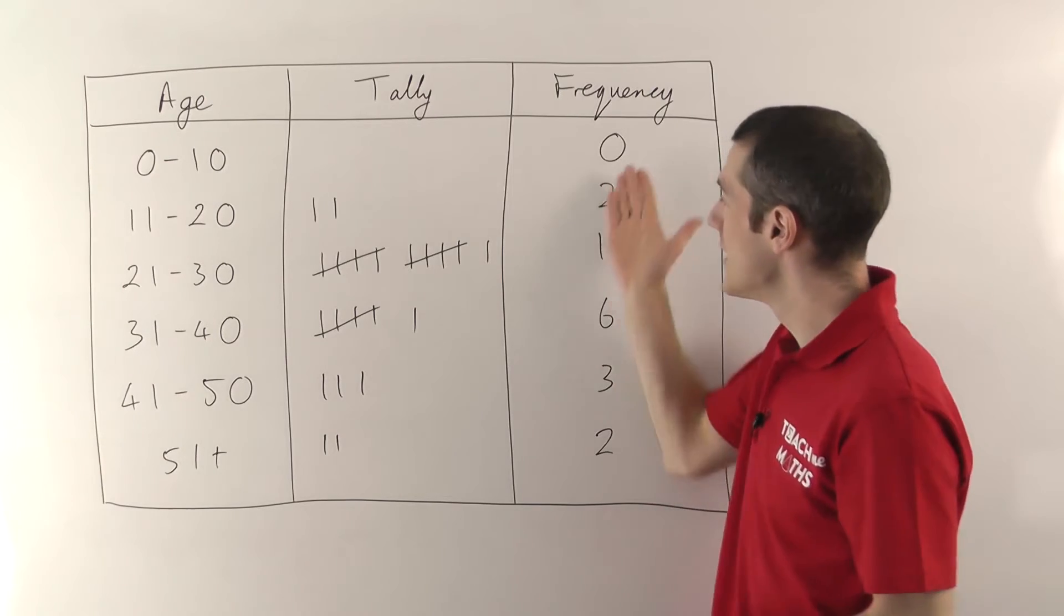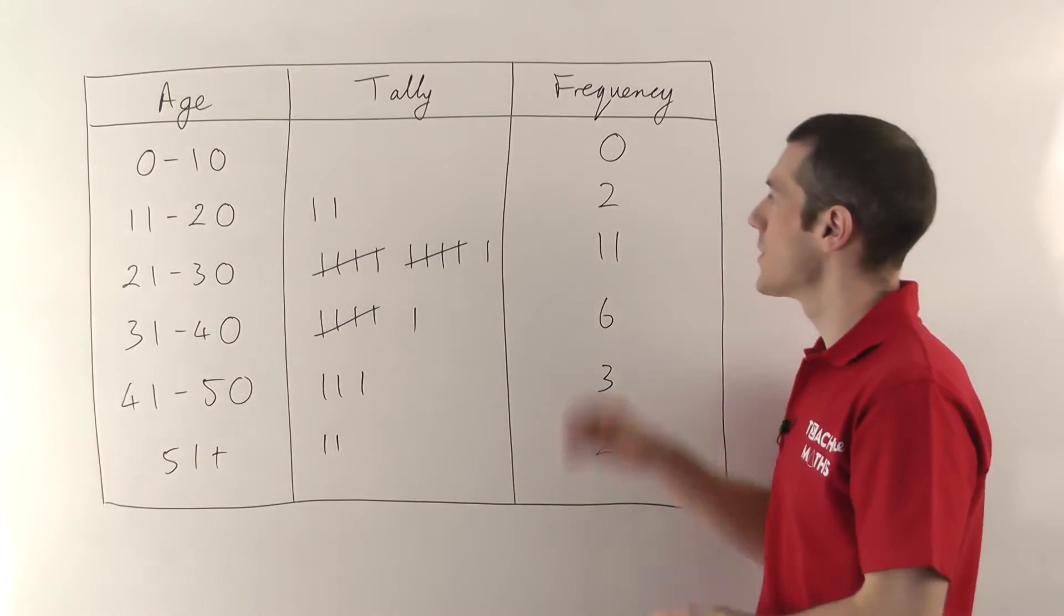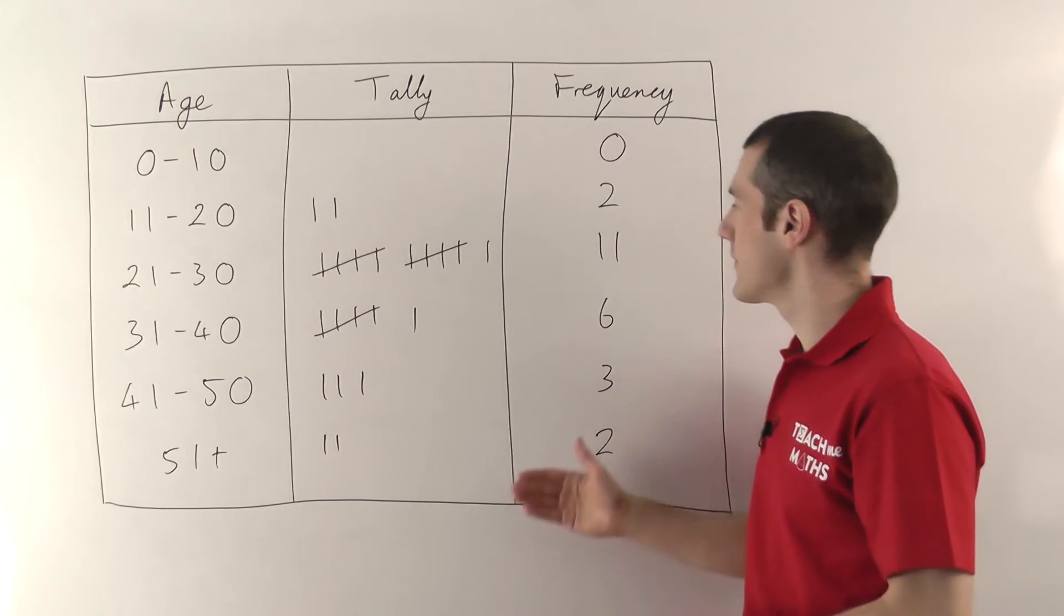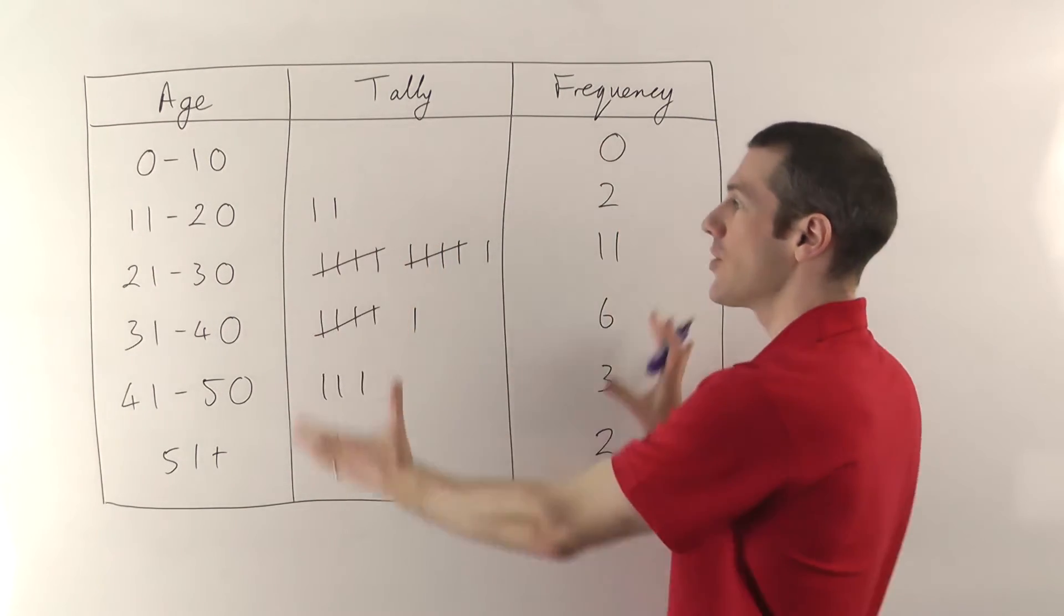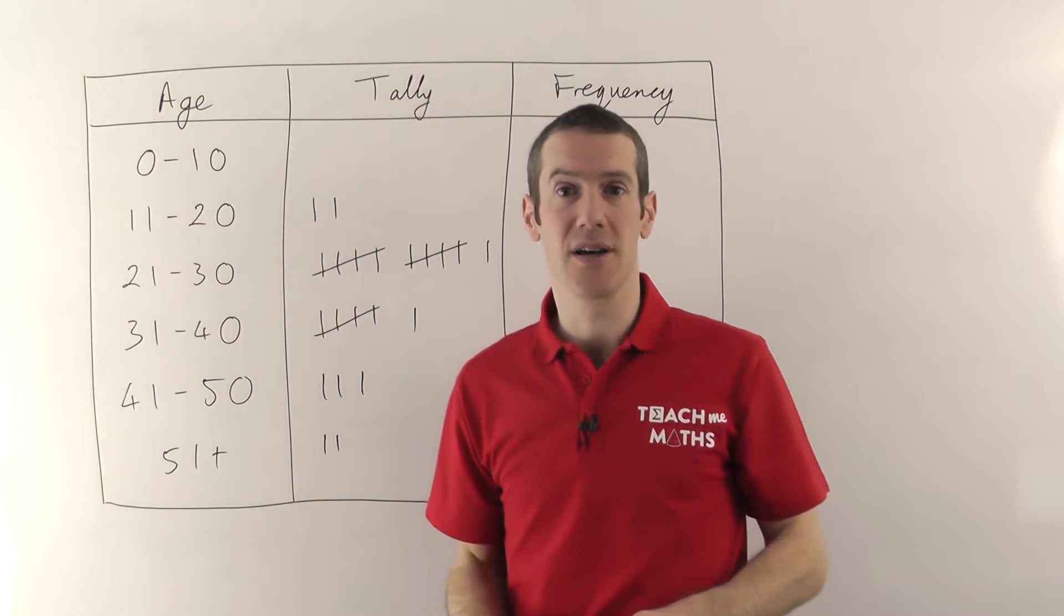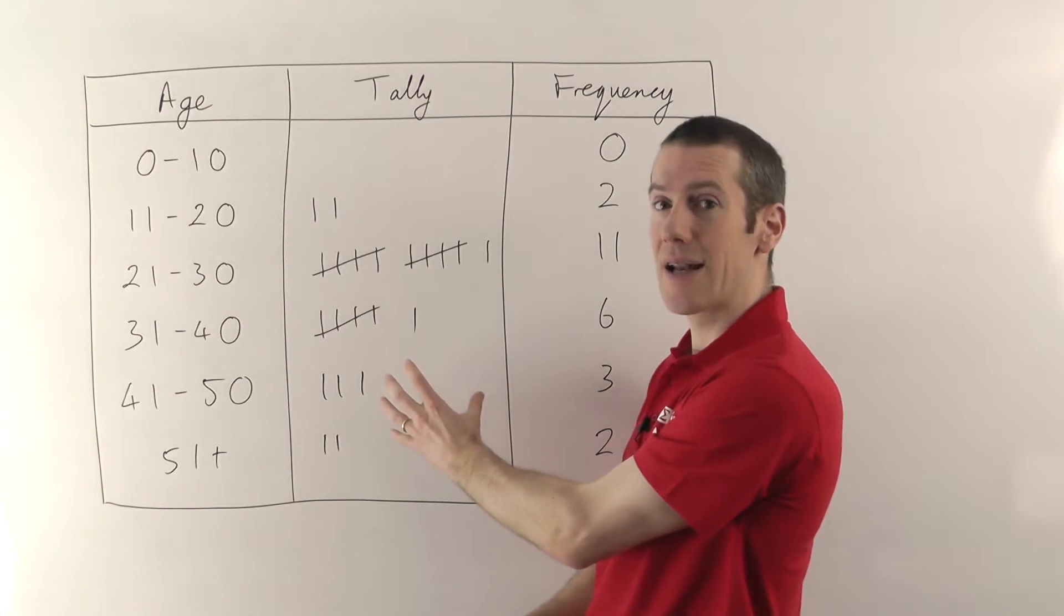It means how many people ticked each of these options. So we've got two people tick 11 to 20, 11 people went for 21 to 30, etc. And those results are what you would use to create your bar charts and your pie charts. You need to do this tally column in order to work out the frequencies.